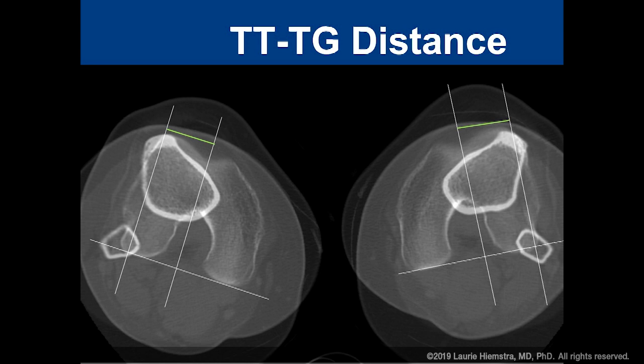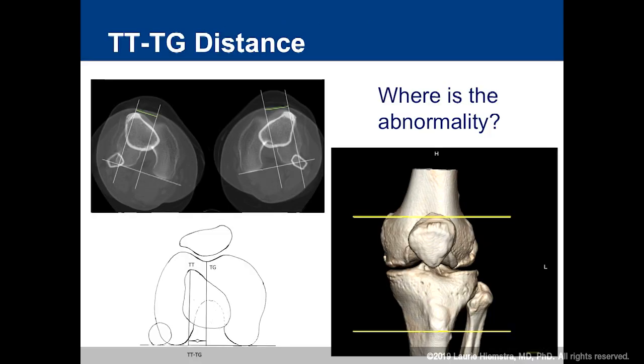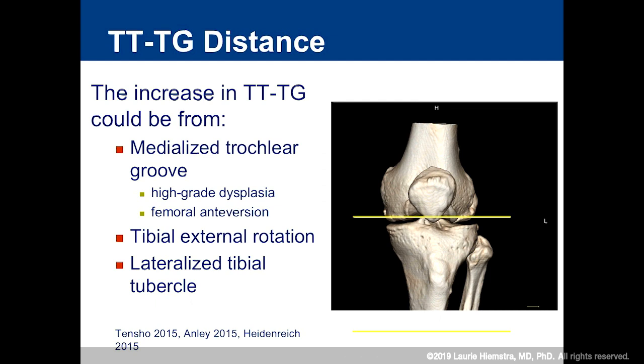What about TTTG distance? This gets a lot of press, and people talk about the meaning of the distance — that's the distance between two points, but where exactly is the abnormality in the bone? If your numbers are the tibial tubercle and the trochlear groove, the abnormality, if that TTTG is high, is somewhere between those two lines. It could be a medialized trochlear groove caused by high-grade dysplasia or femoral anteversion, tibial external rotation, or a lateralized tibial tubercle. Just because your TTTG is high does not necessarily mean you need to move the tubercle — it means you need to figure out where the deformity is.